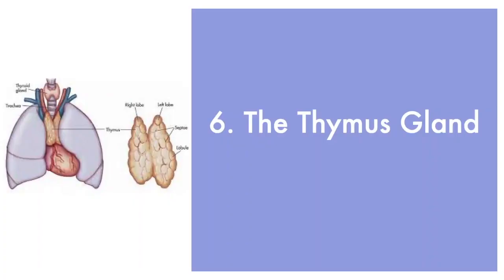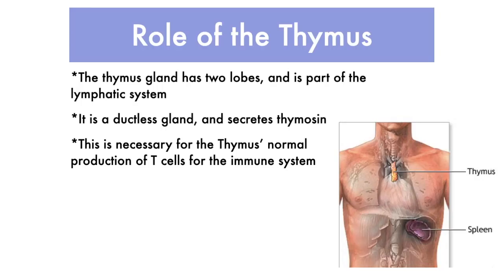The thymus gland shrinks in adults compared to its size in a child. It's part of the immune system and is located in the chest above the heart, and it does produce T cells.